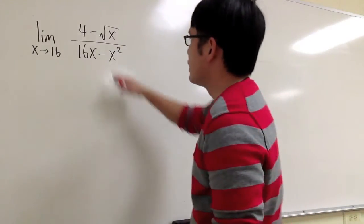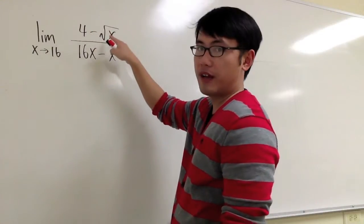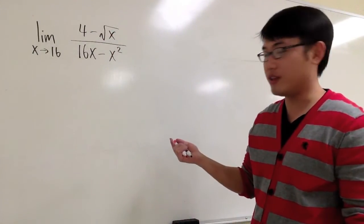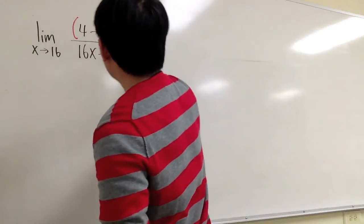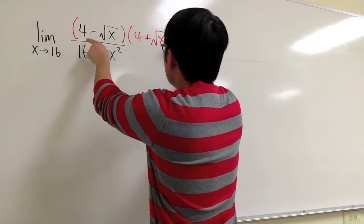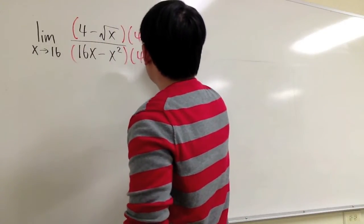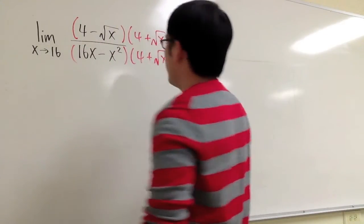In this case, because we have the square root on top, the 4 minus square root of x, let's multiply the top and bottom by its conjugate first. I will multiply the top by 4 plus square root of x, and the bottom is the same: multiply that with 4 plus square root of x.